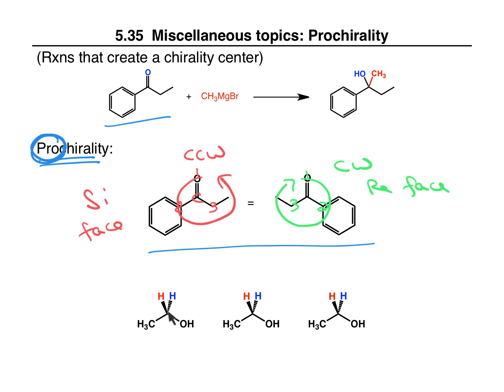What if we have a tetrahedral carbon that is connected to two of the same groups? This is not a chirality center. But if we imagine replacing one hydrogen — let's make it deuterium — and now assign priorities: priority one, two, three, and four. Going from one to two to three in the clockwise direction gives R. So if this hydrogen was changed to a deuterium, this would have the R configuration, and this hydrogen is called pro-R.